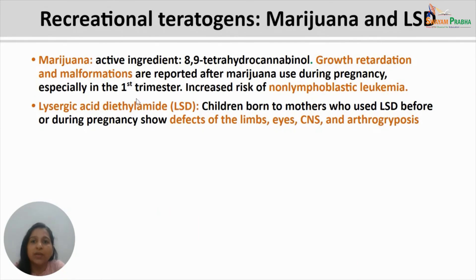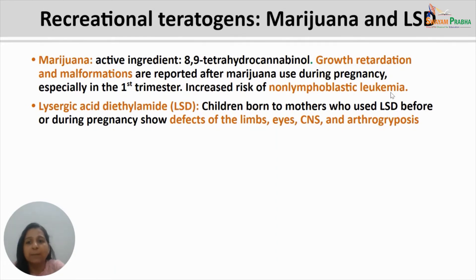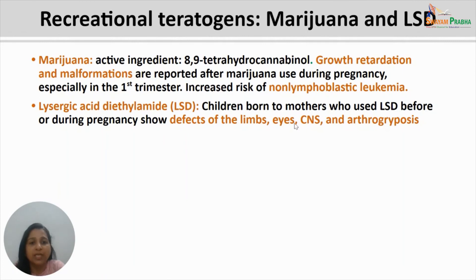Marijuana and LSD are again recreational teratogens. Marijuana's active ingredient is delta-9-tetrahydrocannabinol (THC), and marijuana exposure is linked to growth retardation and malformations, especially with exposure in the first trimester, and increased risk of non-lymphoblastic leukemia. Lysergic acid diethylamide (LSD) causes defects in the limbs, eyes, and central nervous system, and is linked with chromosomal abnormalities in children born to mothers who used LSD before or during pregnancy. Even if not taken during pregnancy, these substances may linger in the mother's circulation and affect the child born to her.